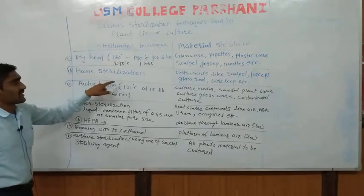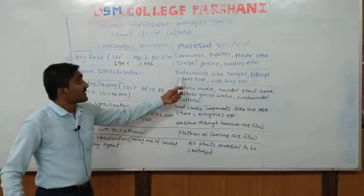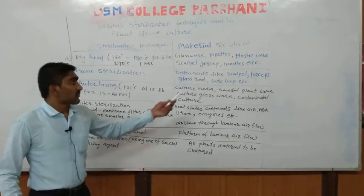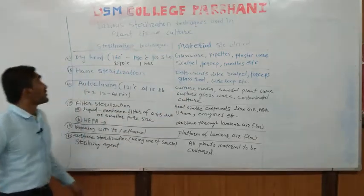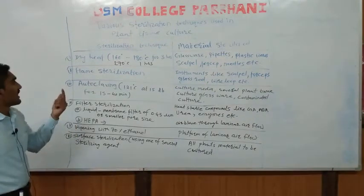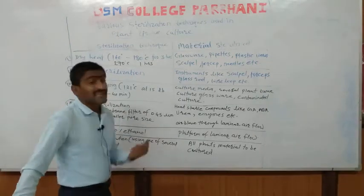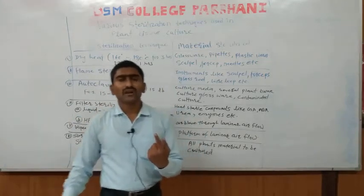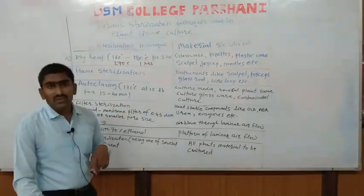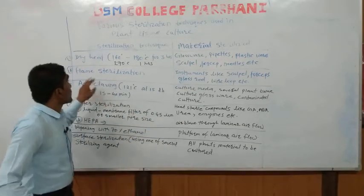Next is the flame sterilization technique. The materials that can be sterilized using flame sterilization include instruments like scalpels, forceps, glass rods, and in microbial practicals, wire loops. A gas connector flame is used here. Heat has the ability to kill microorganisms, and the flame also kills them. For tissue culture, scalpels, forceps, rods, etc., can be sterilized by flame sterilization.